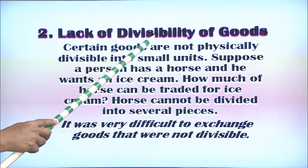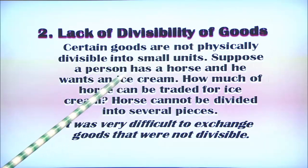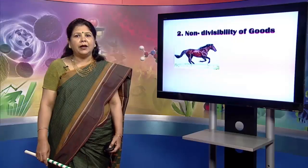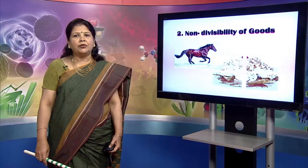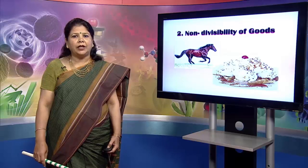The second problem with the barter system was the lack of divisibility of goods. Certain goods are not physically divisible into small units. Suppose a person has a horse and wants an ice cream — how much of the horse can be traded for ice cream? A horse cannot be divided into several pieces, making it very difficult to exchange goods that were not divisible.